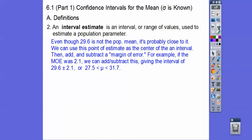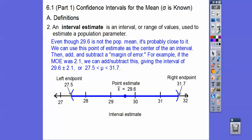An interval estimate is an interval or range of values used to estimate the population. Even though 29.6 is not the population mean, it's probably close to it, so we use it as the center of an interval. We add or subtract what's called the margin of error (MOE). For example, if the margin of error was 2.1 hours, we add and subtract 2.1 from our sample mean 29.6, giving us an interval for where we think the population mean is.